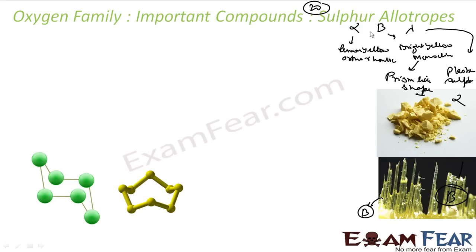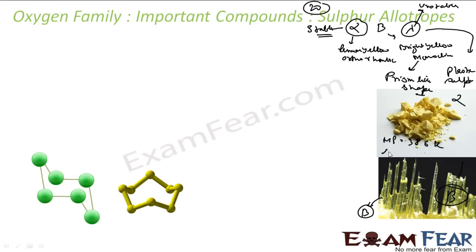We'll study these three allotropes. Alpha is very stable at STP, beta is not much stable, and lambda is very unstable — lambda will convert back into alpha. Alpha sulfur is lemon yellow in color, with a melting point of almost 386 Kelvin and a specific gravity of 2.06.